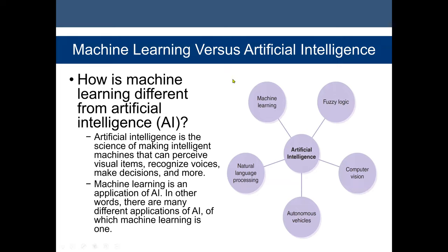Machine learning versus artificial intelligence: artificial intelligence is the science of making intelligent machines that can perceive visual items, recognize voices, make decisions, and more. We can say machine learning is part of artificial intelligence, because with machine learning algorithms we can make decisions based on algorithms and data. Machine learning is an application of AI — there are many different applications of AI, of which machine learning is one.